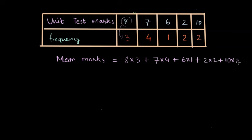Divided by the total number of students who appeared for the test, or the number of students for which the data is available here. The number of students is basically the sum of frequencies, and the sum of frequency is 3 plus 4 plus 1 plus 2 plus 2, that is 12.